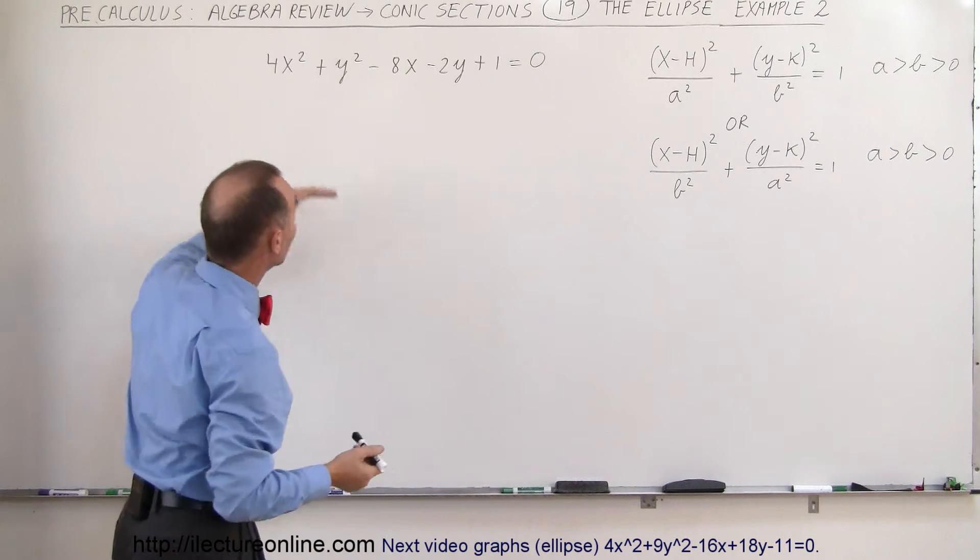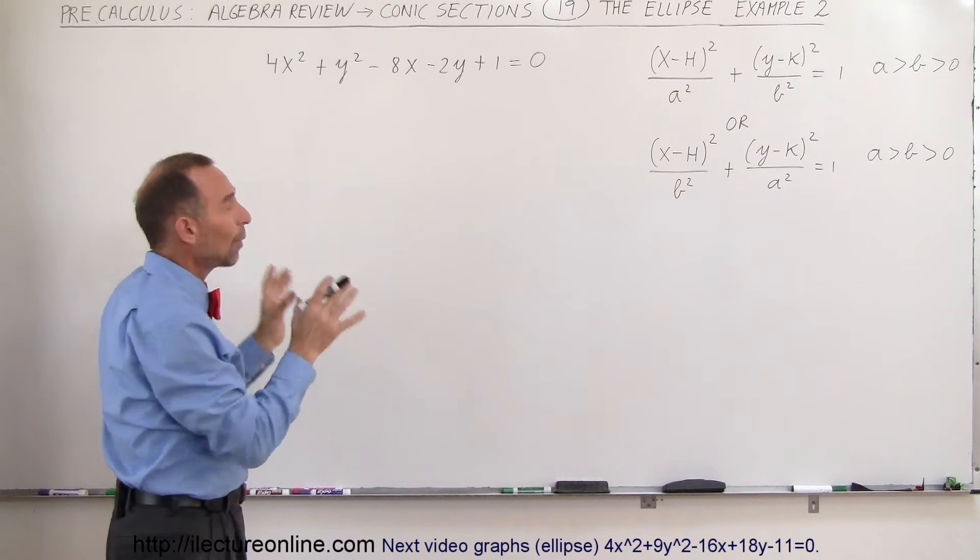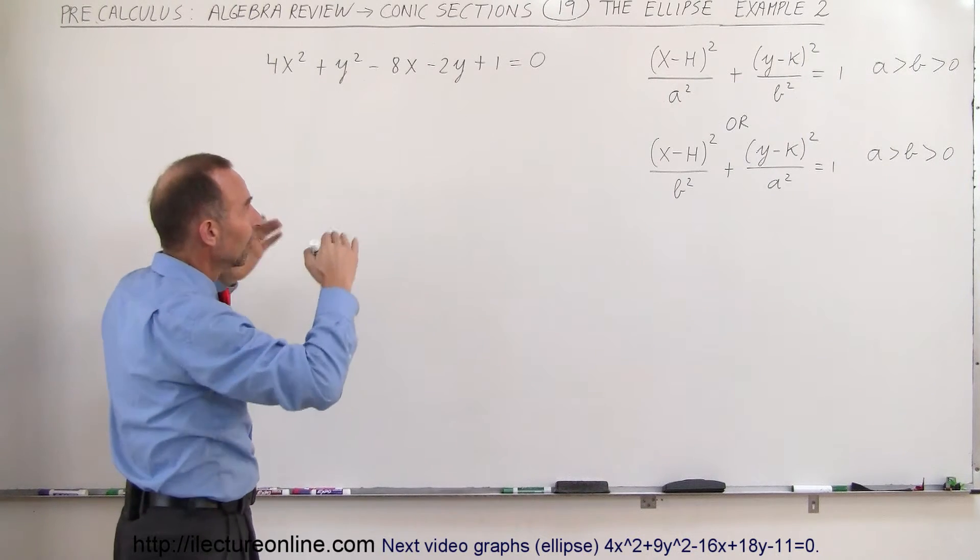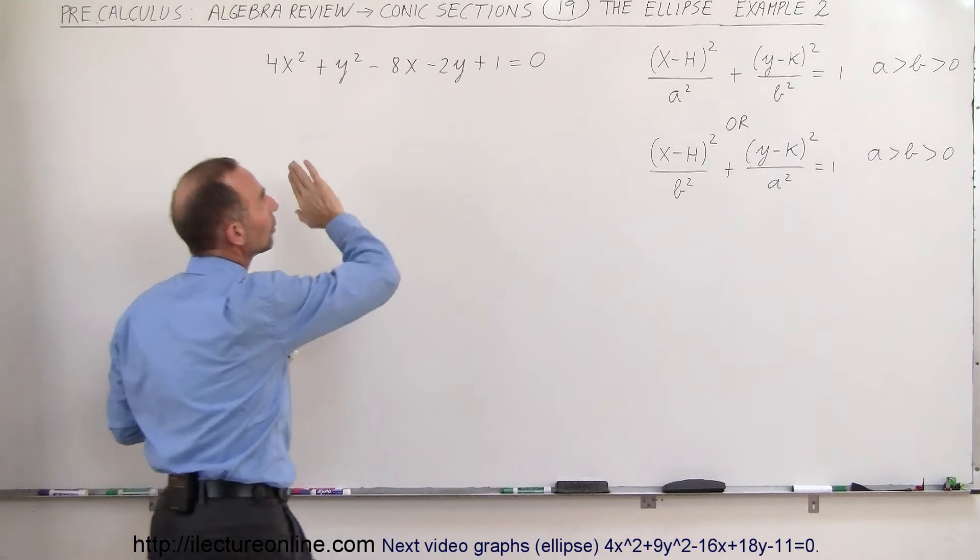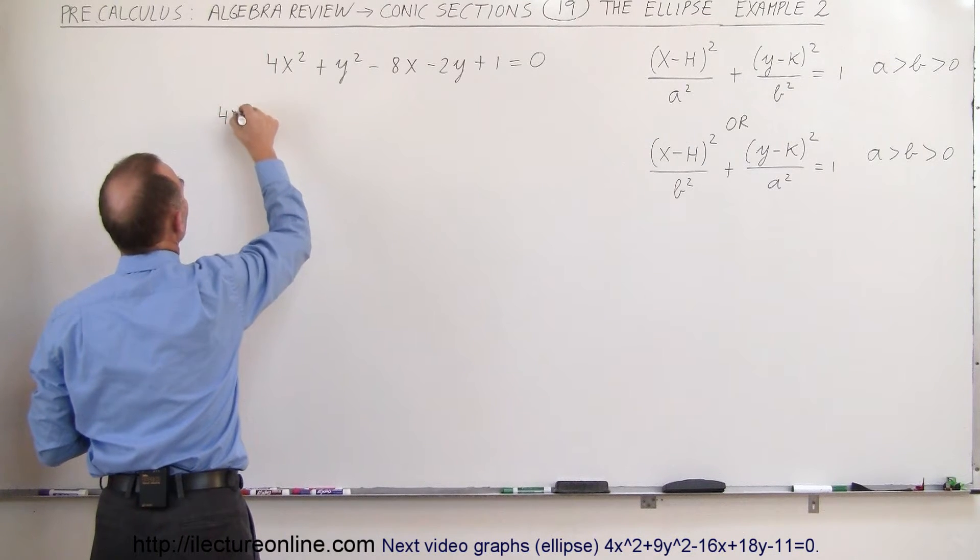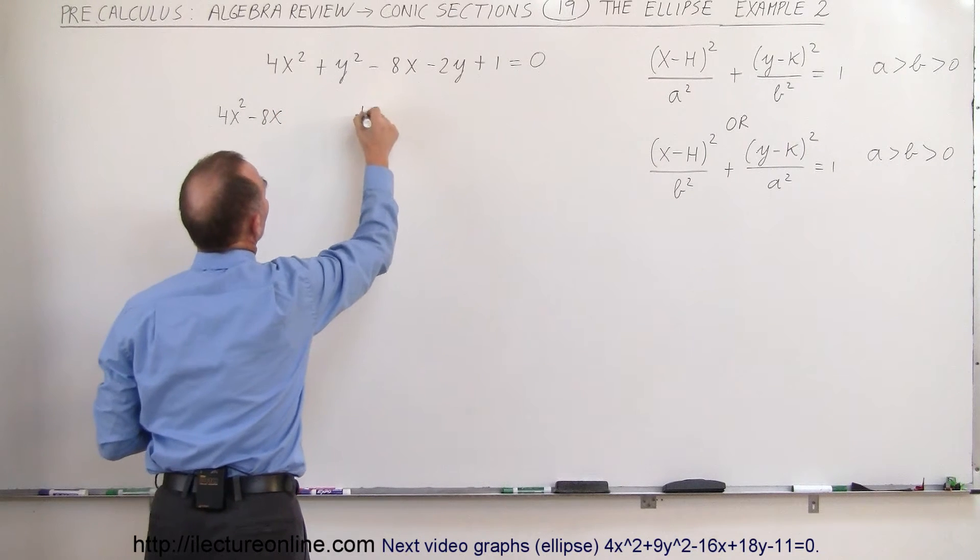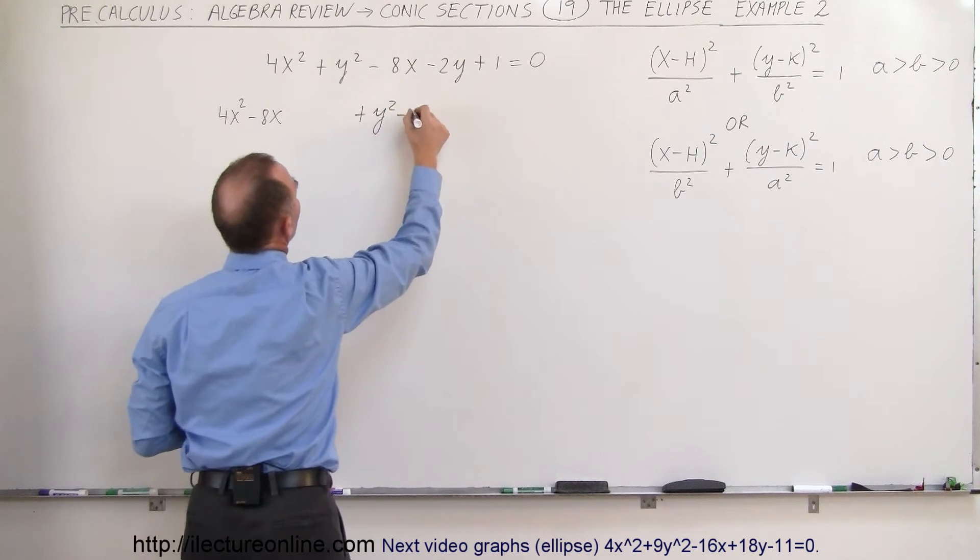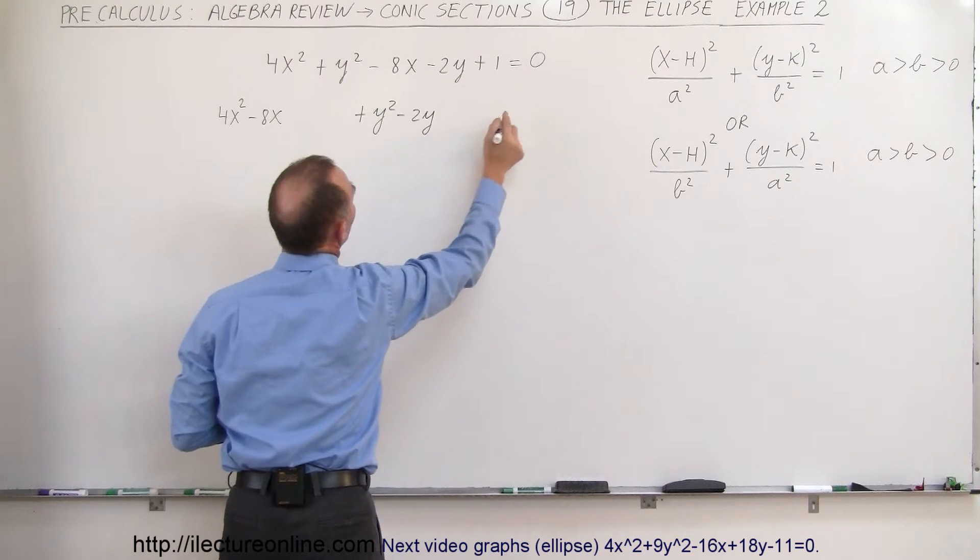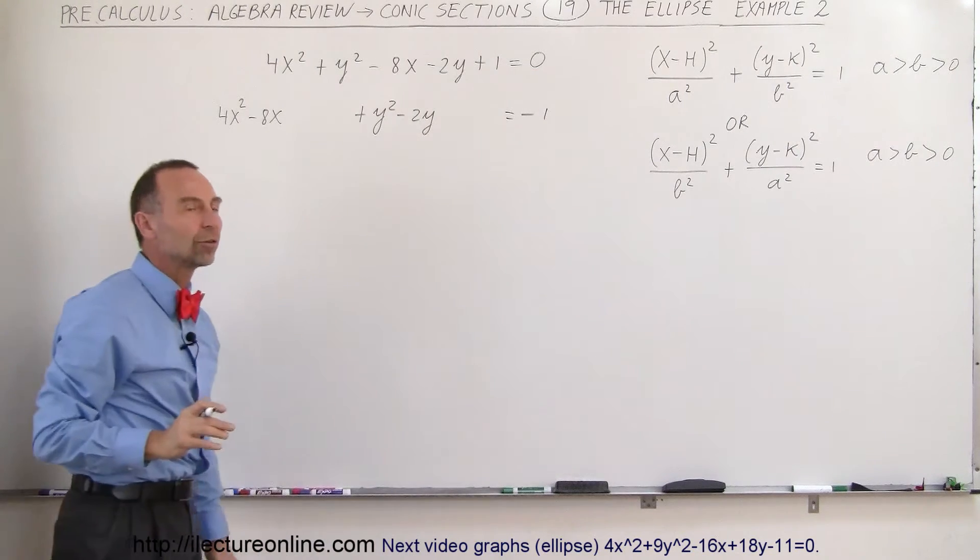Now we take this equation, and of course we're going to separate the x variables from the y variables in such a way that we can complete the square and want all the constants on the right side. So this can be written as 4x squared minus 8x, leave some space, plus y squared minus 2y, leave some space, equals minus 1 when we bring the positive 1 to the right side of the equation.